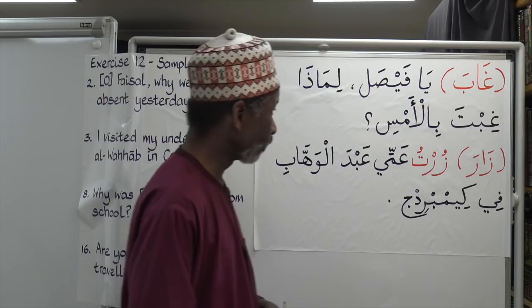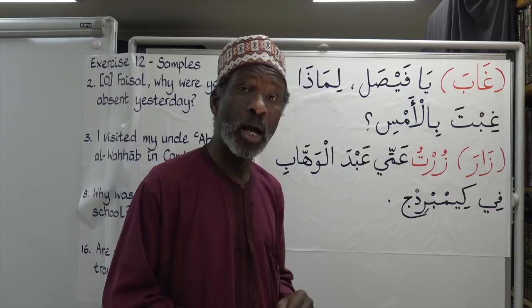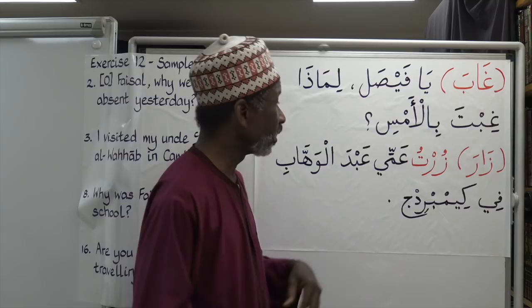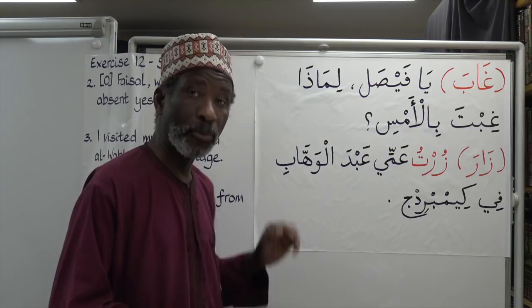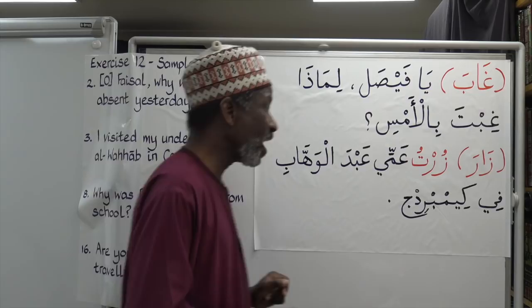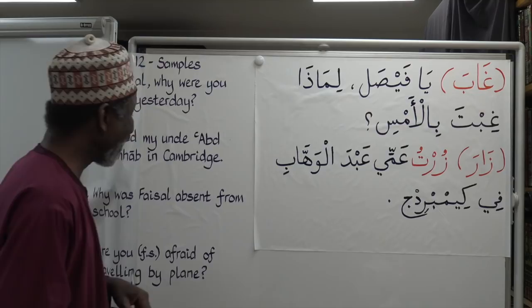Zurtu ammi — that means 'I visited my paternal uncle,' that is the brother of my father. Zurtu ammi Abd al-Wahab fi Cambridge — 'I visited my uncle Abd al-Wahab in Cambridge.'